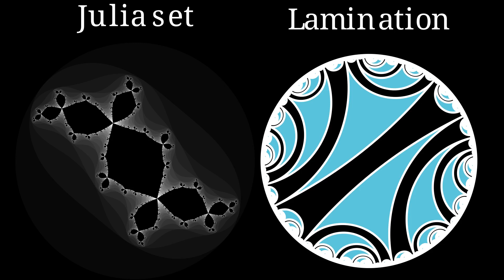What we're after today is how this lamination comes from and encodes information about this Julia set. A hint about what we mean is that there is one triangle in the lamination for each cut point in the Julia set.